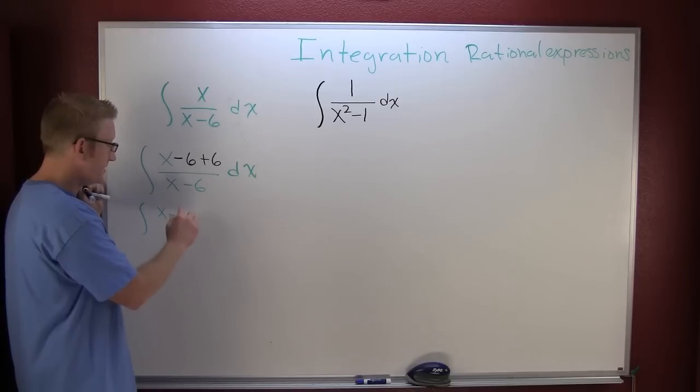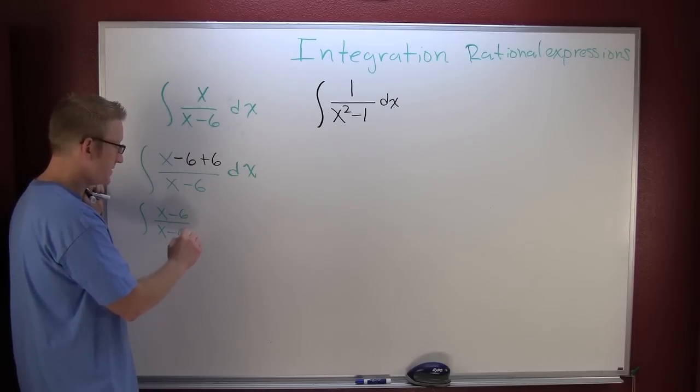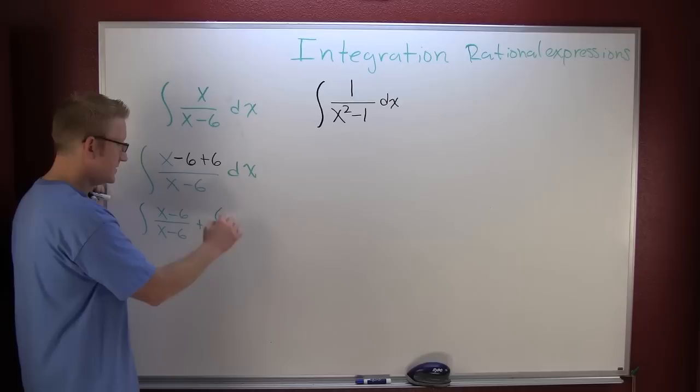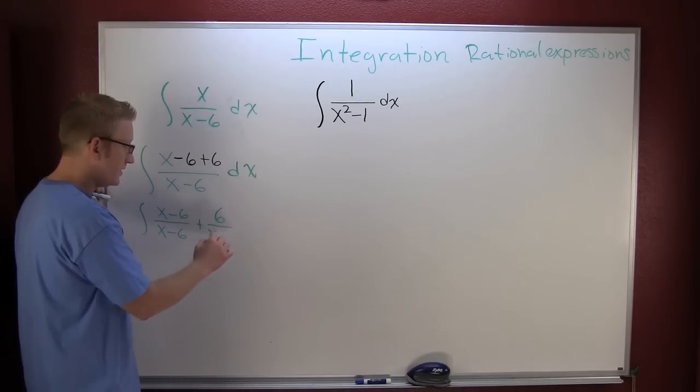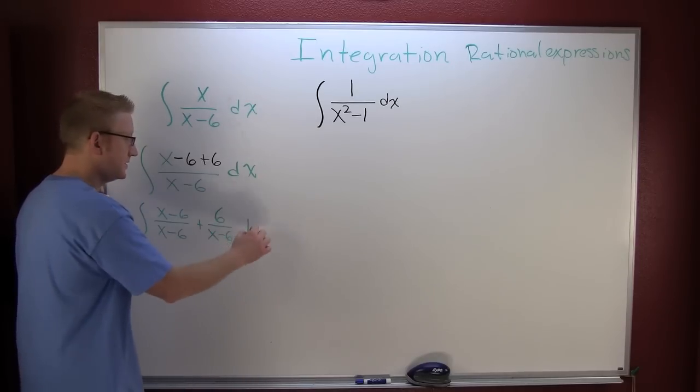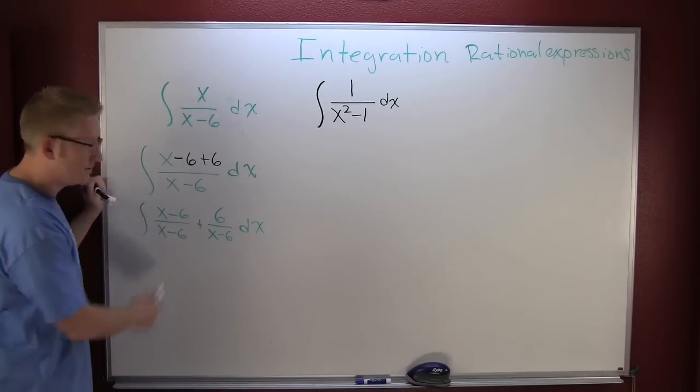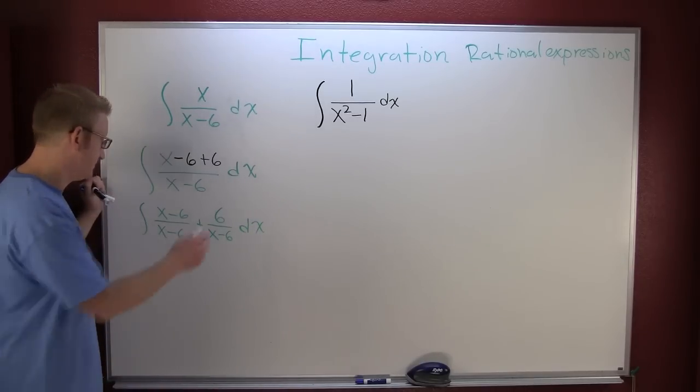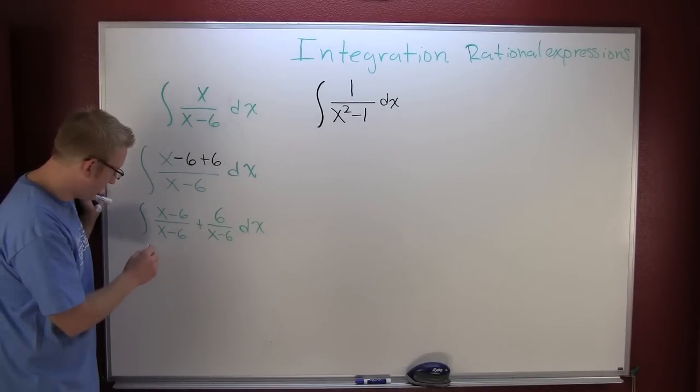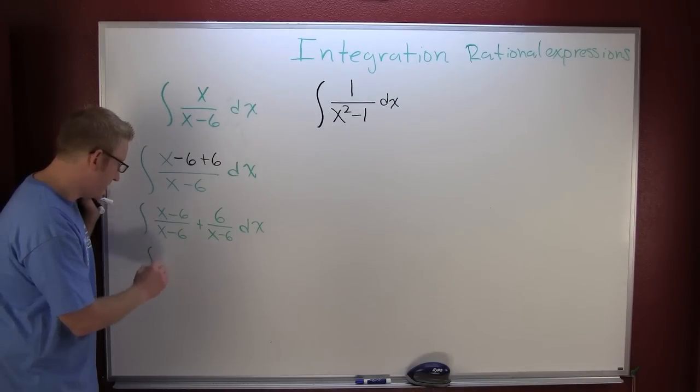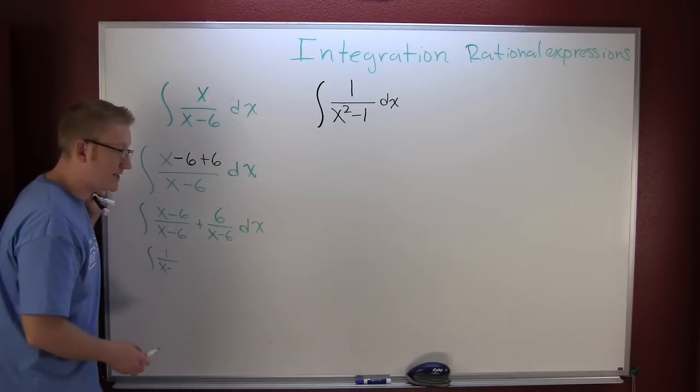I can split this into the integral of x minus 6 over x minus 6 plus 6 over x minus 6 dx. What's that? It's a lovely one. And then I'm going to rewrite that as the integral of 1...